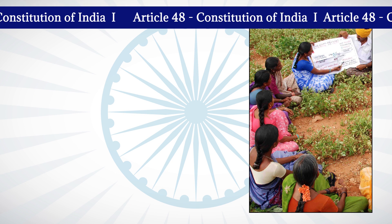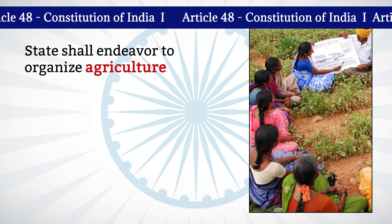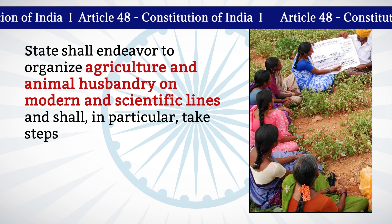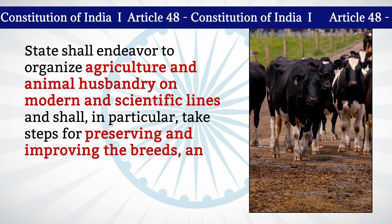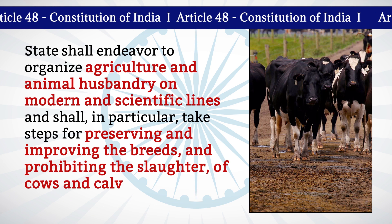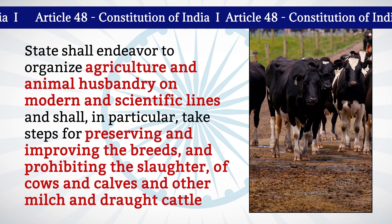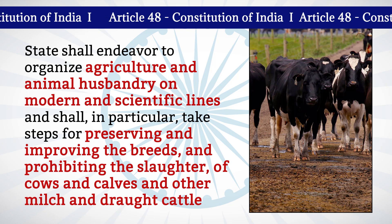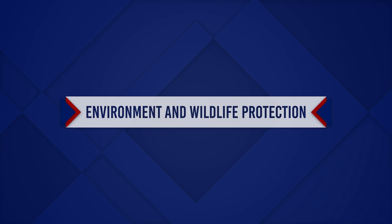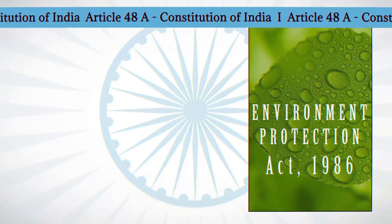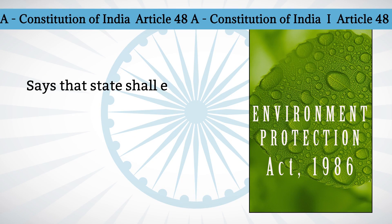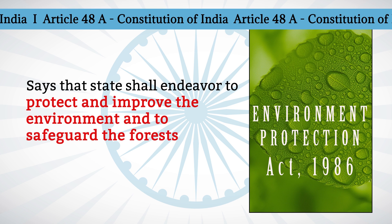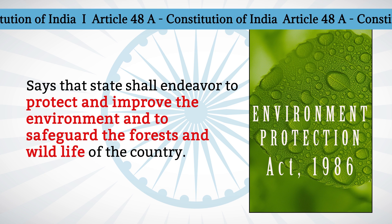Article 48 says that the state shall endeavor to organize agriculture and animal husbandry on modern and scientific lines, and shall in particular take steps for preserving and improving the breeds, and prohibiting the slaughter of cows and calves, and other milch and draught cattle. Article 48A says that the state shall endeavor to protect and improve the environment and to safeguard the forests and wildlife of the country.